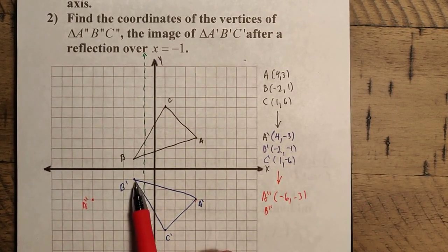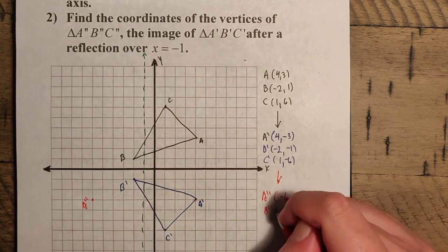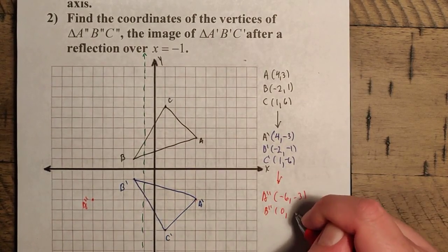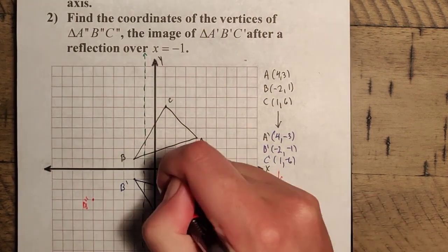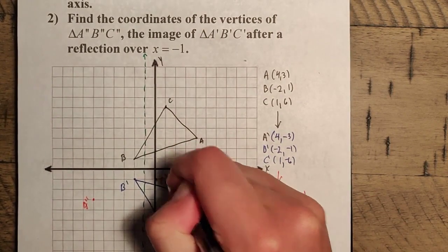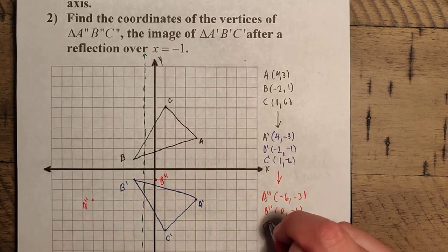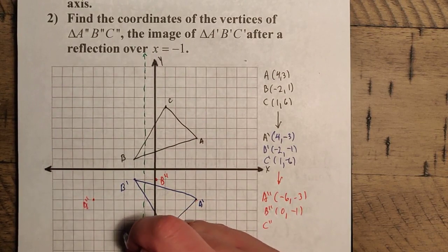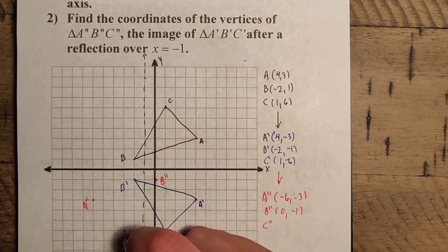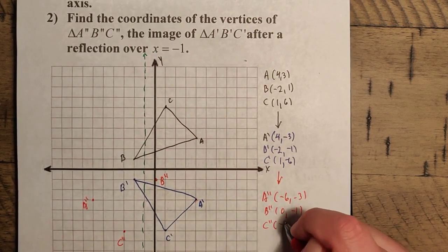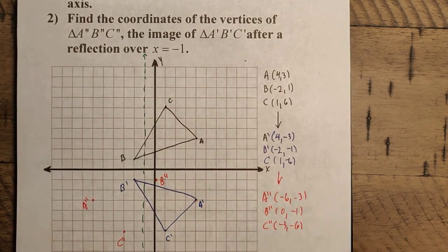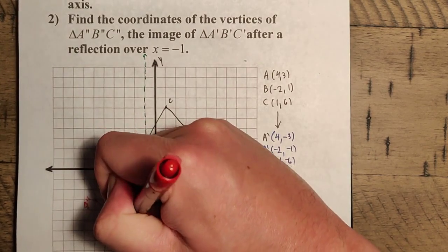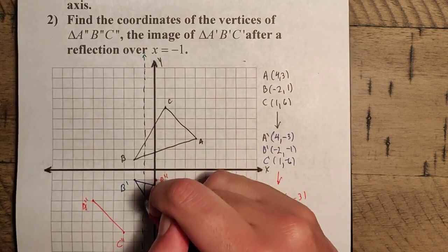Similarly for B'': B is 1 unit to the left of the mirror, so we move 1 to the right — negative 1 plus 1 is 0 — giving us 0, negative 1. And C'' is 2 units away from the mirror, so it goes 2 units to the other side, landing at negative 3, negative 6. Now we can see our new triangle.